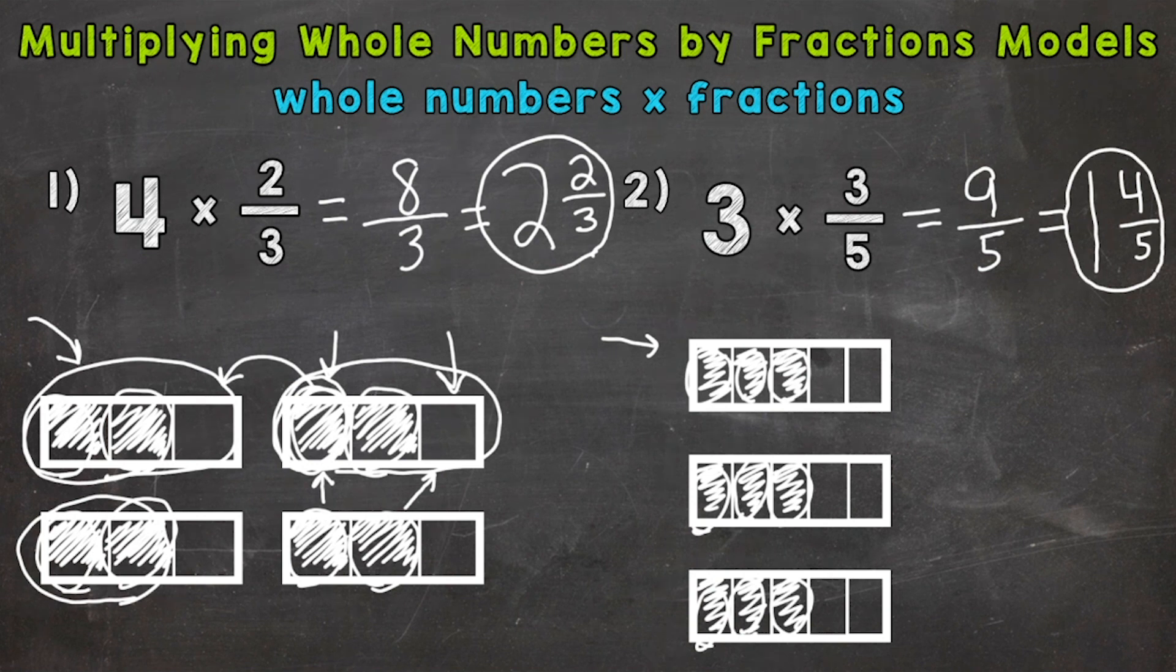Now I'm also going to show you how to shift the pieces down in our model to equal one and four-fifths. Let's take these two-fifths here and shift them up here. So we have one-fifth left in that middle rectangle. And we're going to take that one-fifth that is left and move it to the bottom rectangle.